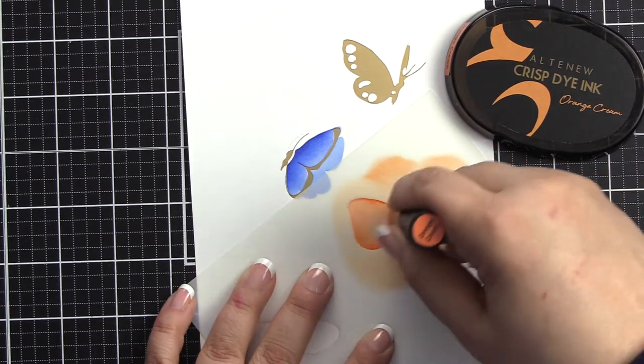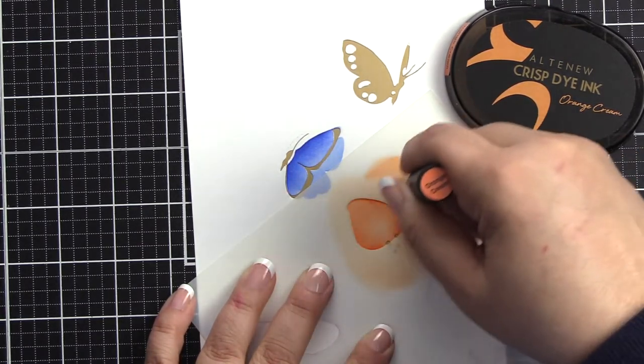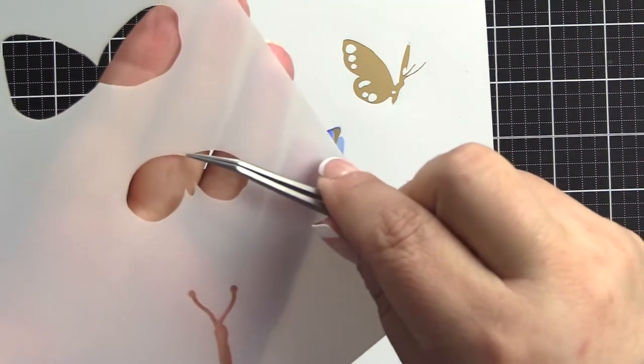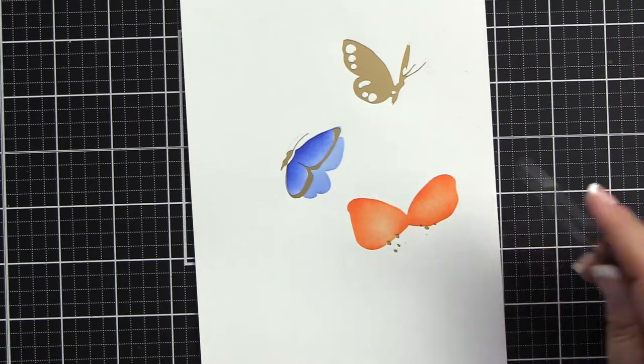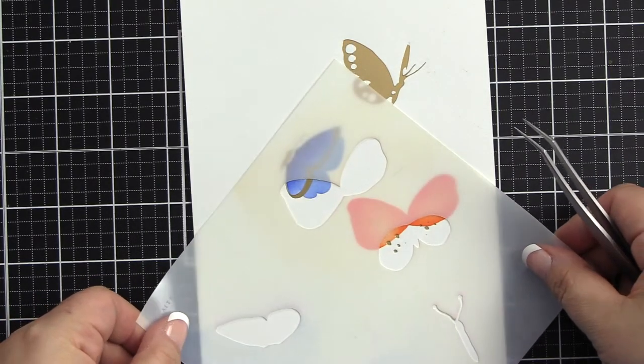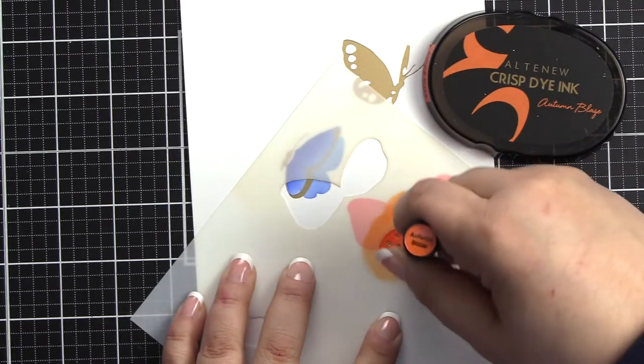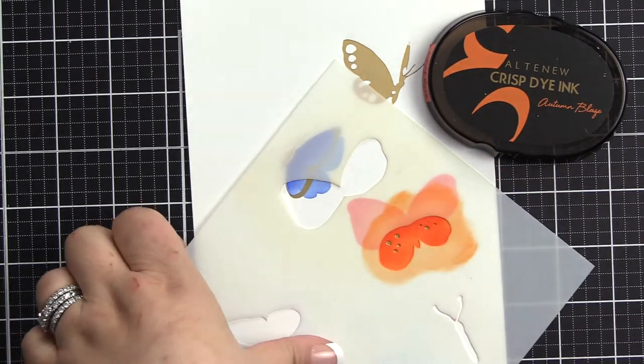I'm using orange cream for the top wings of this second butterfly. Now we will move on, and there's a point that you align with the point of the top part. That will create the bottom part of your butterfly, and for that we will use Autumn Blaze ink.